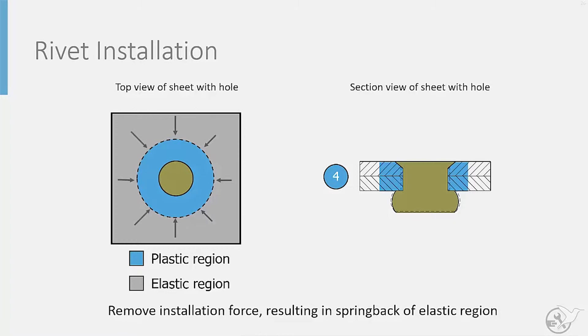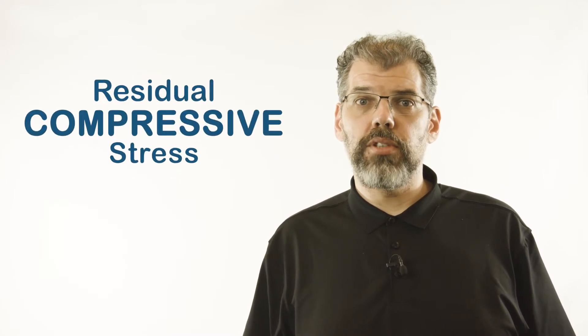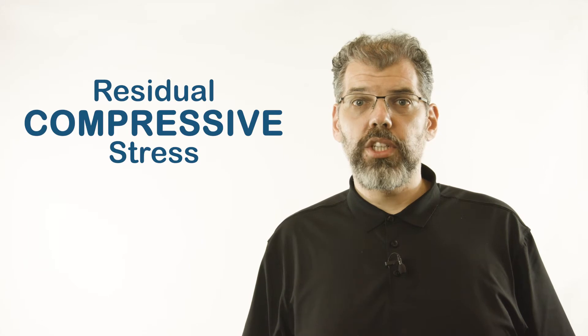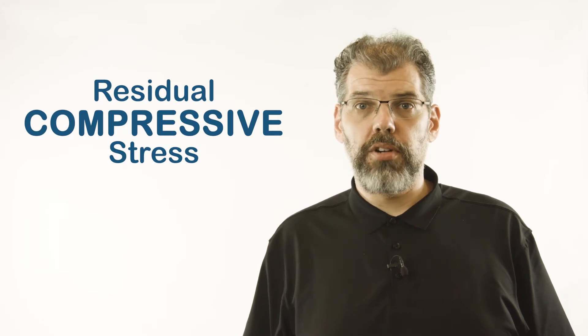The surrounding sheet will thus compress the plastic region, trying to push it back into its original shape. This final state leaves the material around the rivet hole in a state of residual compressive stress, which helps reduce the stress concentration.